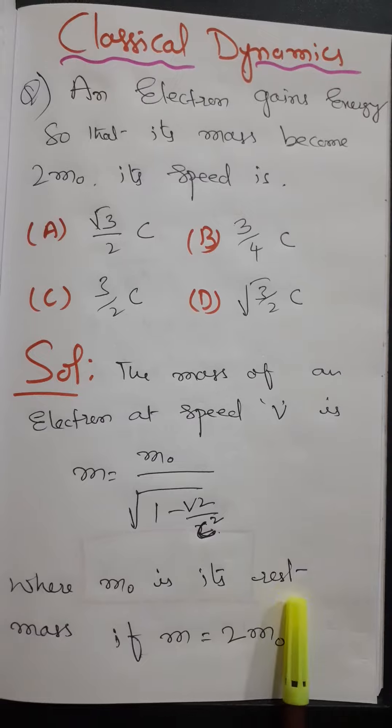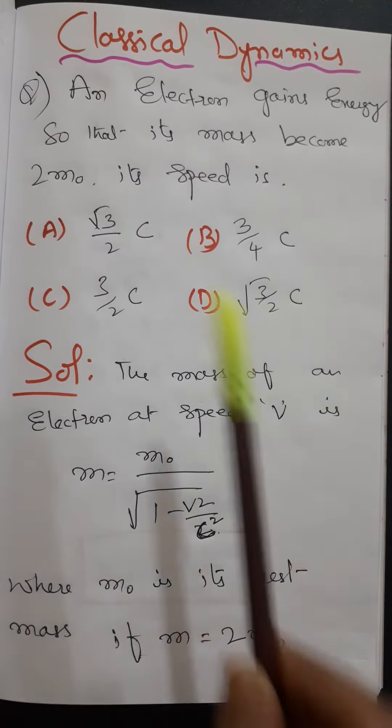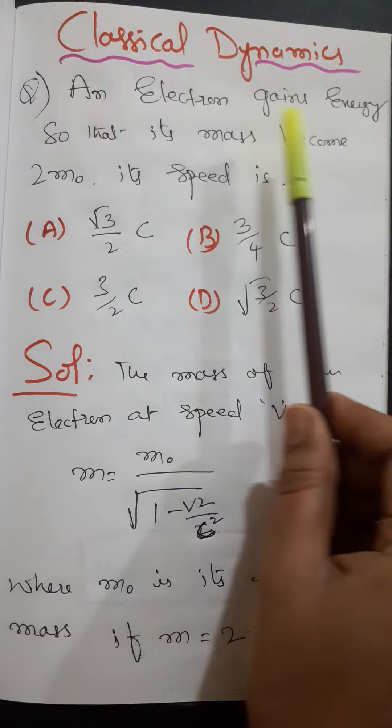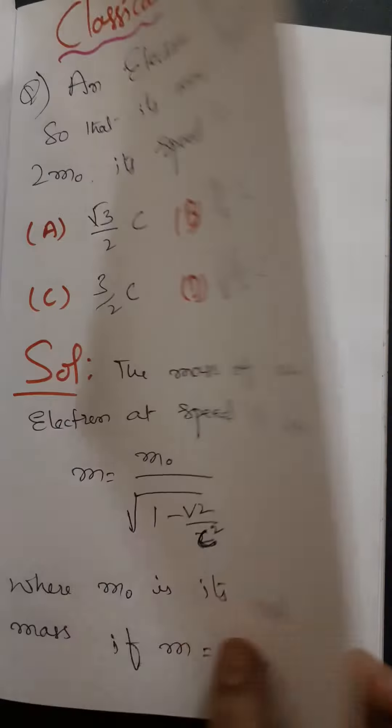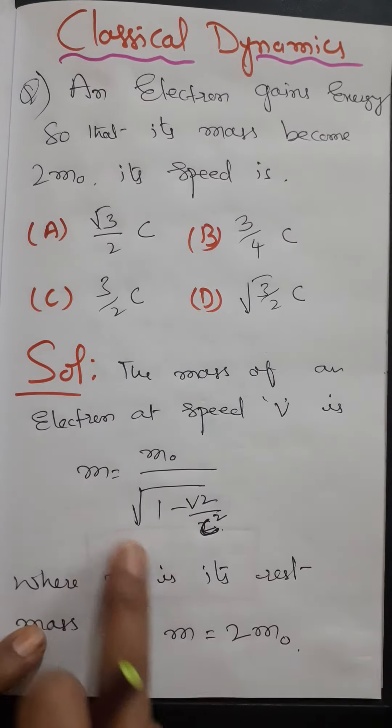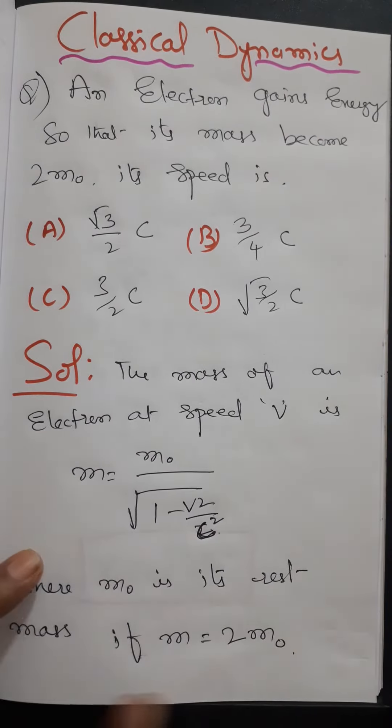m0 is its rest mass. And if m is equal to 2m0, in the question it is given that m equals 2m0. The electron mass is double. So just substitute the value of m, replace it by 2m0 in the formula.